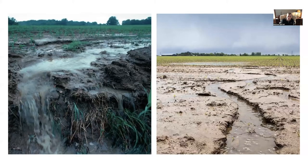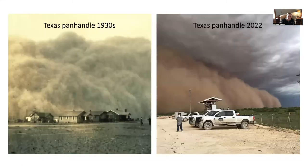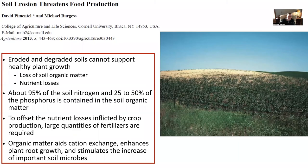Tillage also results in the destruction of soil microbial life, decreased nutrient density of food, reduced water infiltration, and desertification in areas with little rainfall. Here's water erosion, and here's wind erosion — that's the Texas Panhandle Dust Bowl in the 1930s, the same phenomenon occurring in 2022. Soil erosion threatens food production because eroded soils cannot support healthy plant growth. About 95% of soil nitrogen and 25–50% of phosphorus is contained in soil organic matter, so large quantities of synthetic fertilizers are required to offset nutrient losses.